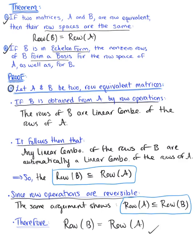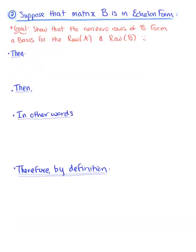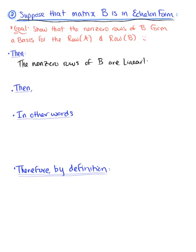The first part of our theorem has been shown. Now let's show the second statement: if matrix B is in echelon form, the nonzero rows of matrix B form a basis for the row space of matrix A as well as for the row space of matrix B. If matrix B is in echelon form, then the nonzero rows of matrix B are linearly independent.